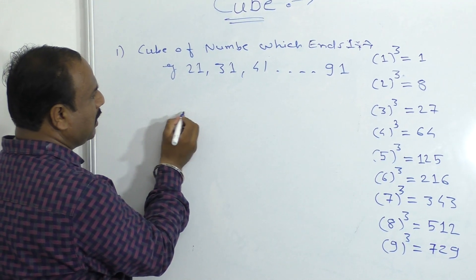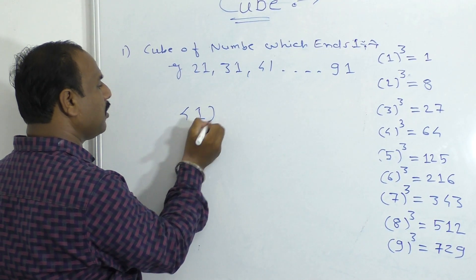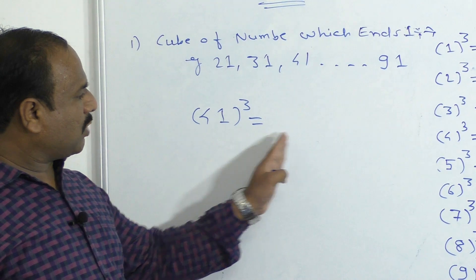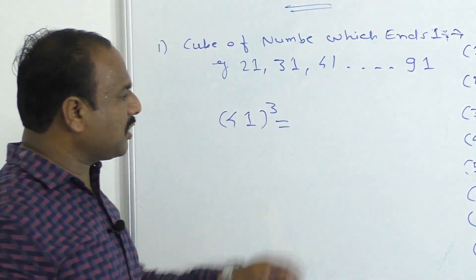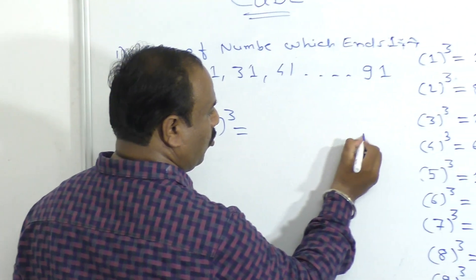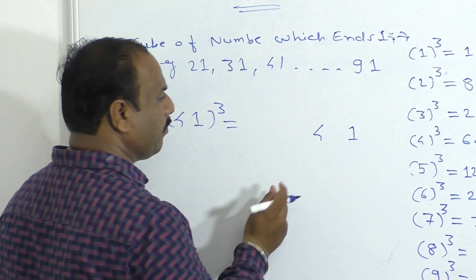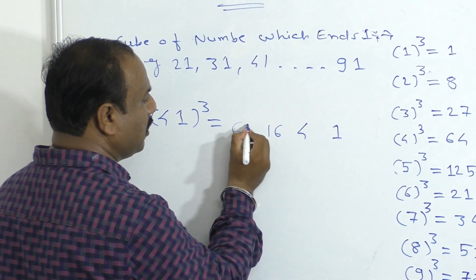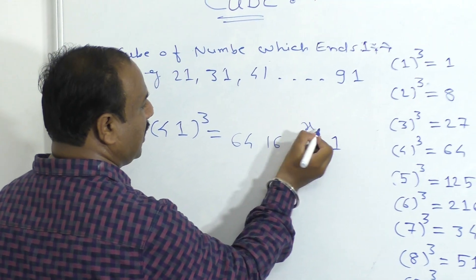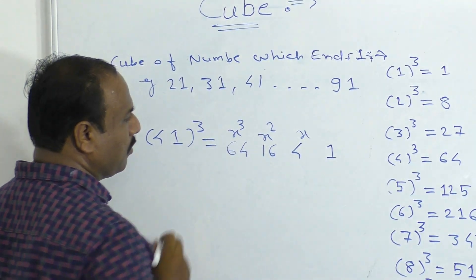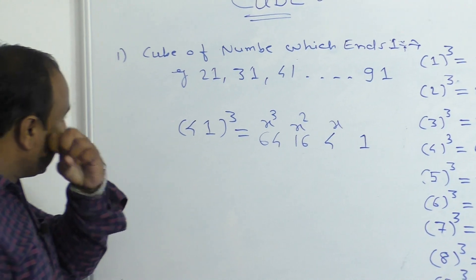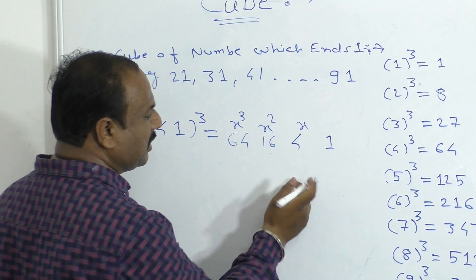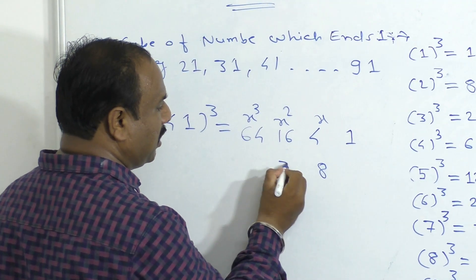For example, we have 41. 41 cubed. If we have 1 on the unit side, we can see the end is 1. So: 1, 4, and the other side — 4 squared is 16, and 4 cubed is 64. If we have 1 on the other side, we start with 1. So we have two numbers. 4 doubled is 8. And 16 doubled is 32.